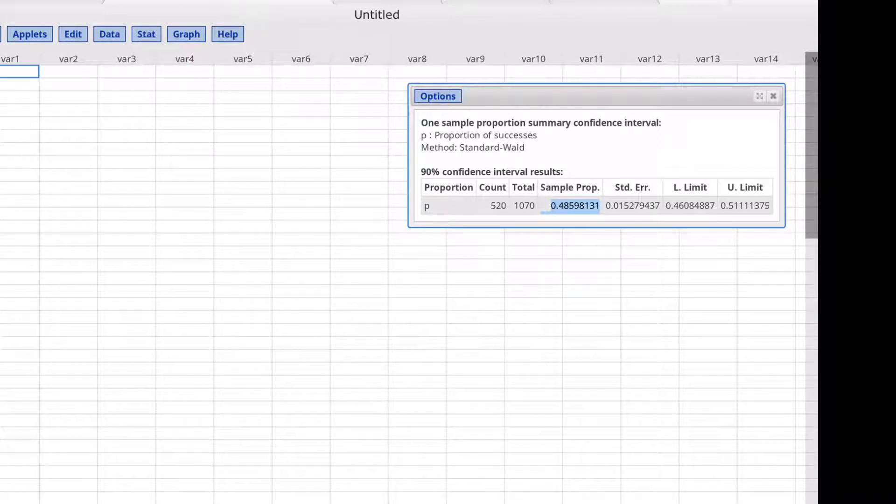The next thing we were to do was to find the margin of error. The margin of error is half the width of the confidence interval. So we'll look at the lower limit and the upper limit for the confidence interval.